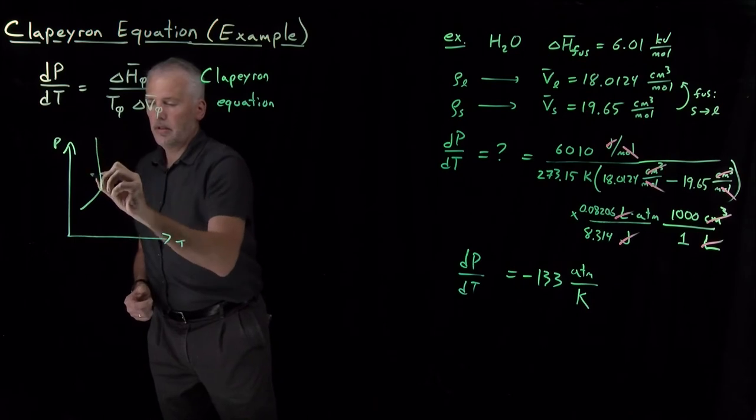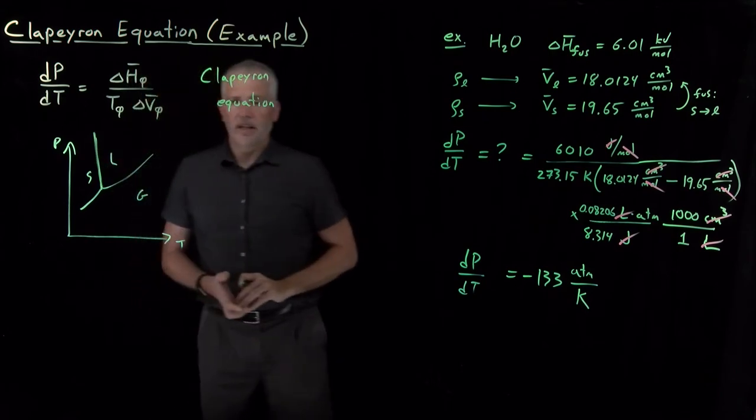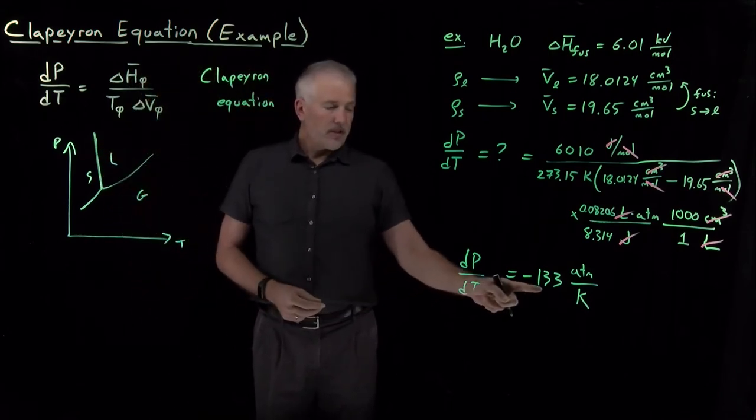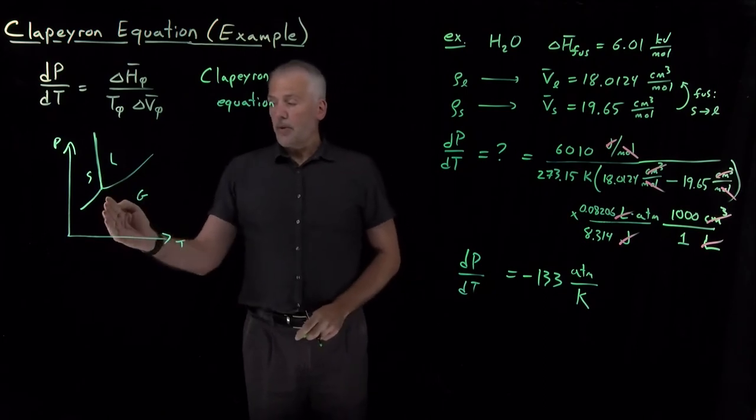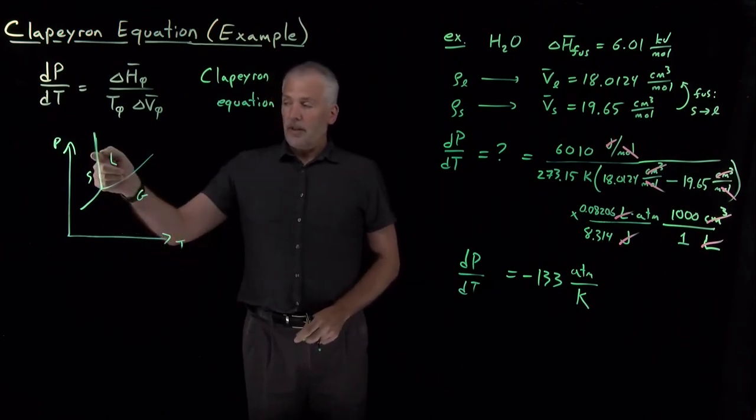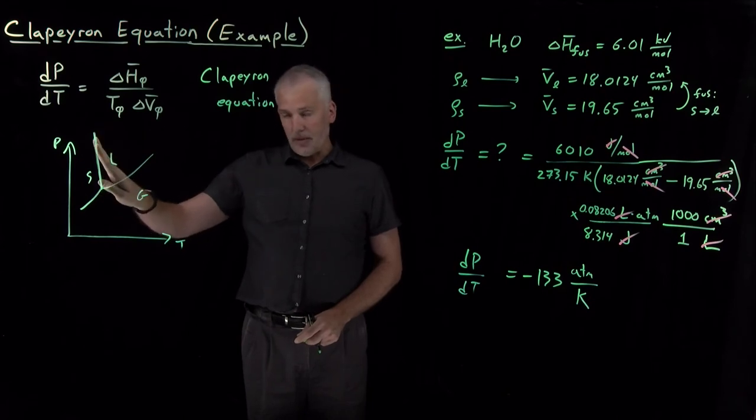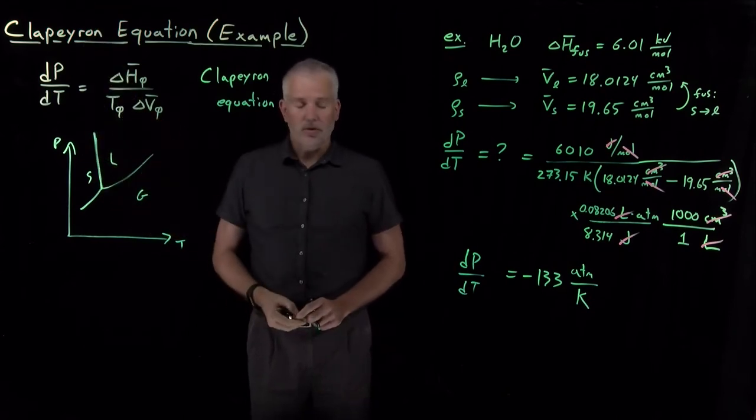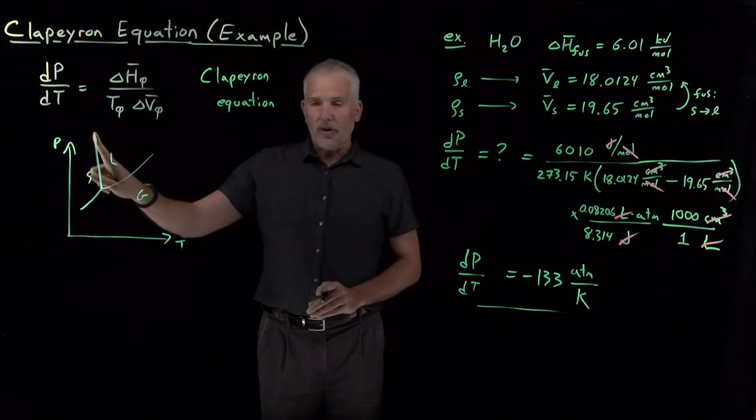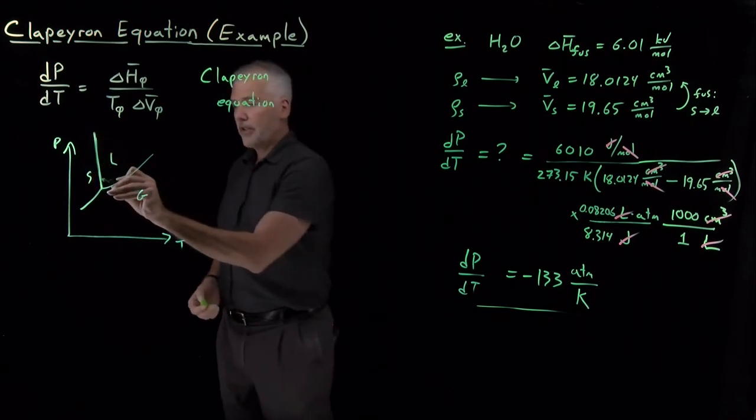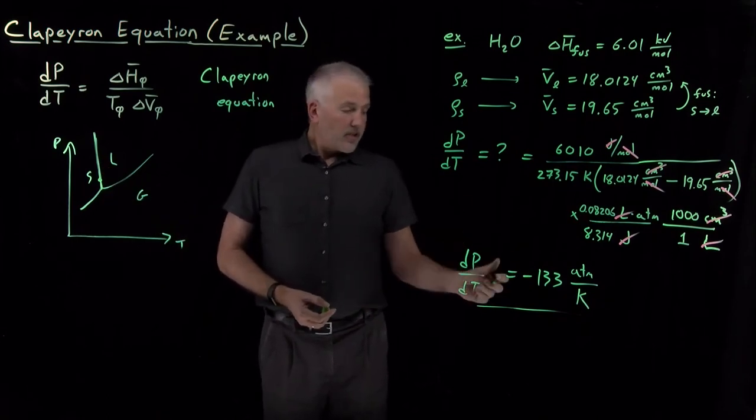The slope of that line, I've drawn it leaning backwards because Clapeyron told us that the slope of that line is negative 133 atmospheres per Kelvin. When I change the temperature by positive one Kelvin, the pressure drops by 133 atmospheres. That's quite a steep curve. It's leaning backwards, but it's pointing upwards quite close to vertical. That's one thing that this Clapeyron equation tells us. We can calculate numerically what the slopes of these lines are. Near the normal freezing point of water, the slope of that line is this particular numerical value.